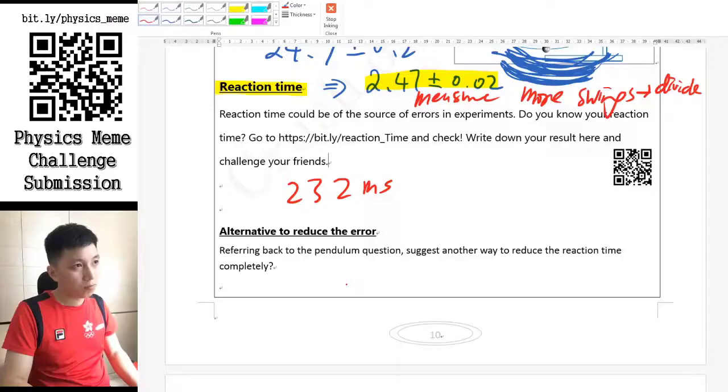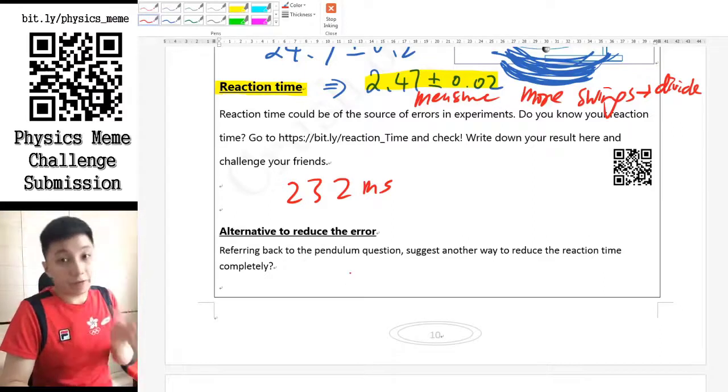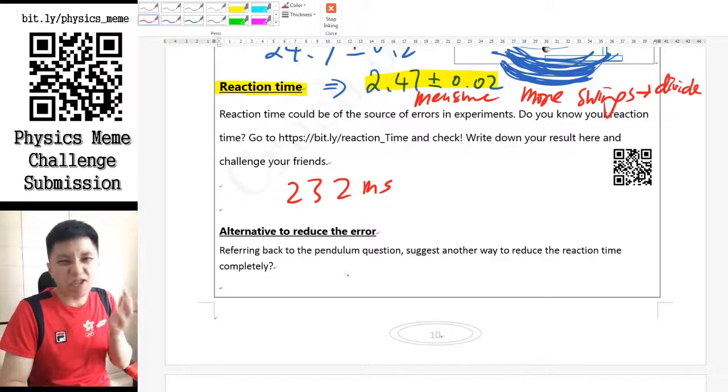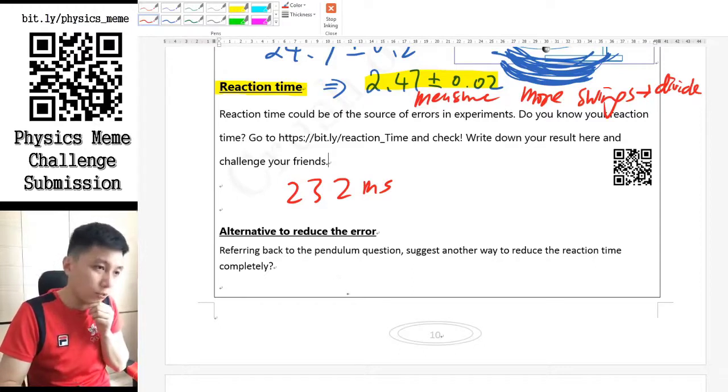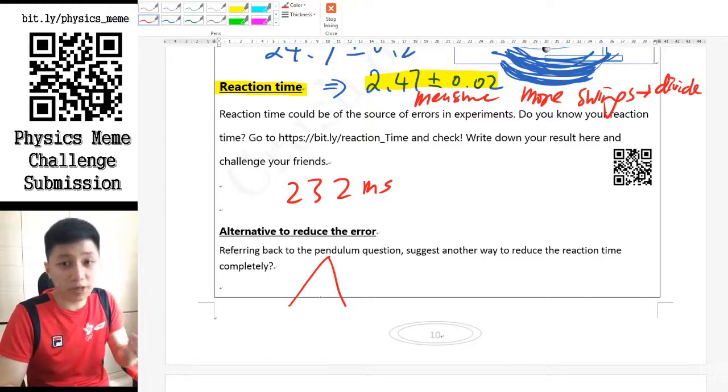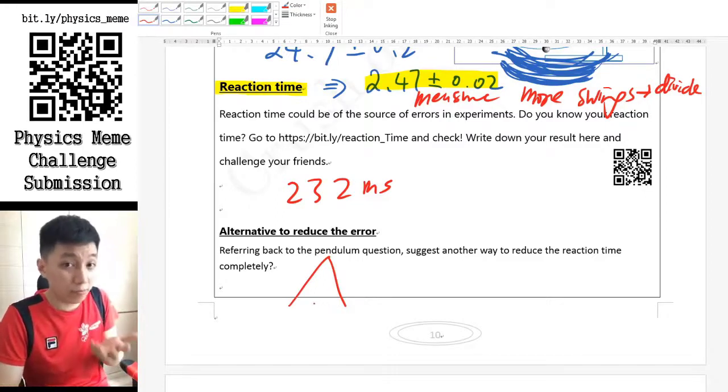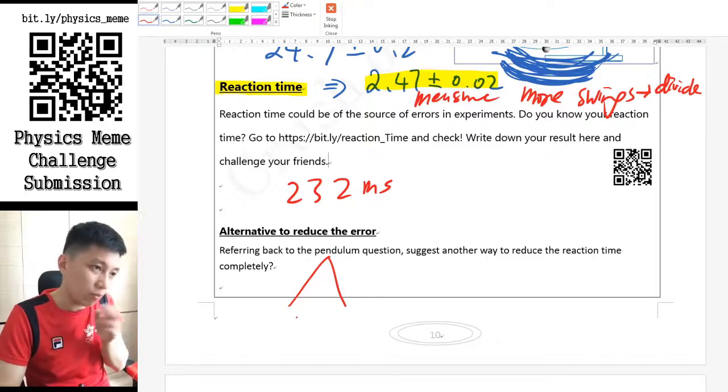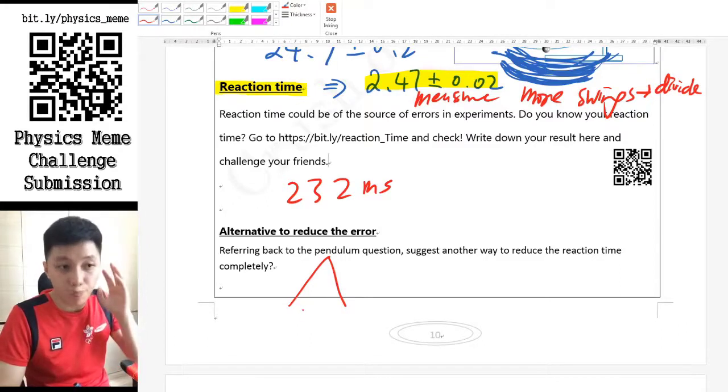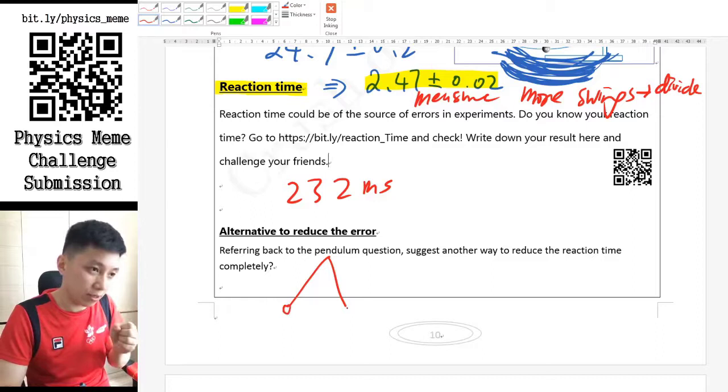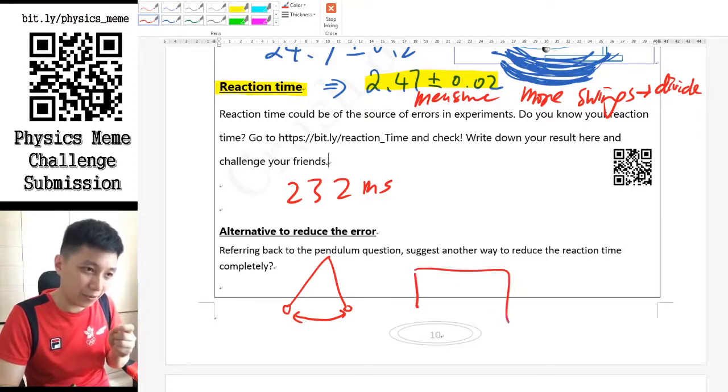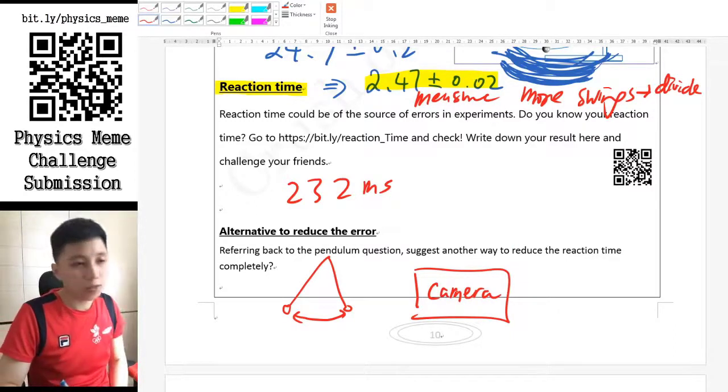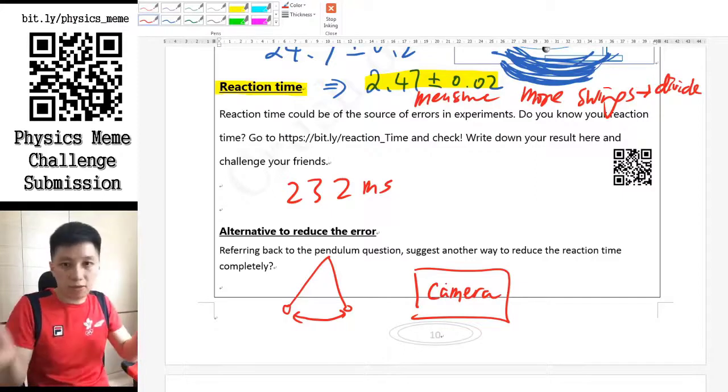The answer is actually very simple but kind of genius and technological. The way that you have to do simply is - you see we can measure like 10 swings if you want to - but then one way of reducing the reaction time could simply be: imagine there is a pendulum swinging around here, what you can do is you can set up a camera. Simply, it could be your phone, so you just have to take a video of it and then you can check it out in the replay.